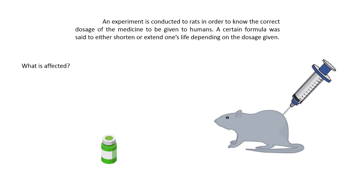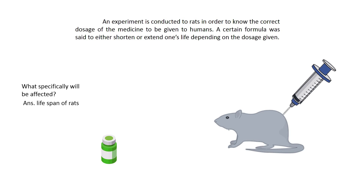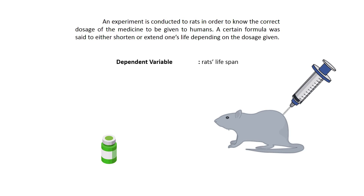So for us to identify what the variables in the study are, we need to ask: what is affected? What is affected after injecting? Of course, the rats. But that is not the exact variable. We need to ask ourselves more specifically — what specifically will be affected about the rat? So yung pinaka maapektuhan, siyempre, are the lifespan of rats. It could shorten the life or extend the rat's life. So that would be our dependent variable — the lifespan of rats.